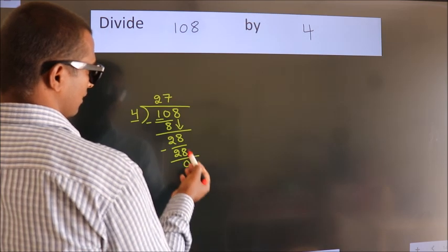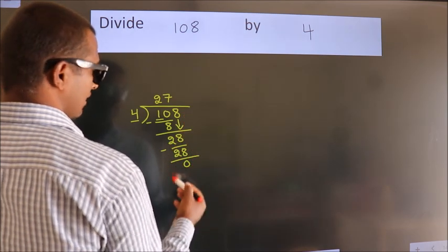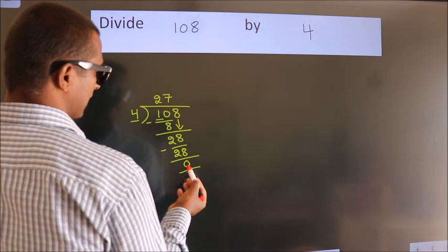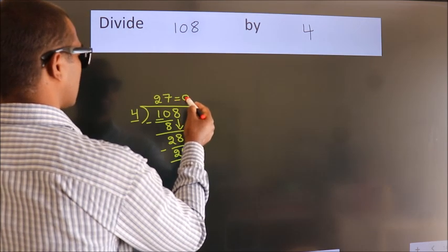After this, no more numbers to bring it down. And we got remainder 0. So this is our quotient.